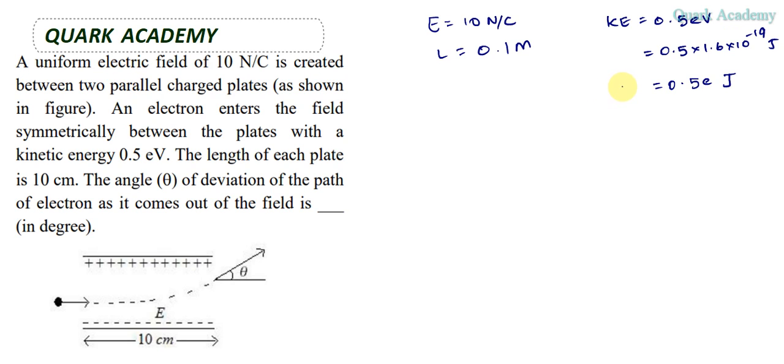We need to find the angle at which the final velocity makes with the horizontal line as it leaves the region. Initially, the electron has only velocity along the X direction. Let's specify directions: this is X and this is Y. As it enters the electric field, the electric field gives a force upward, so it gets a Y component of velocity also.